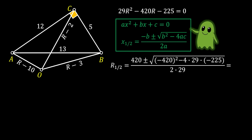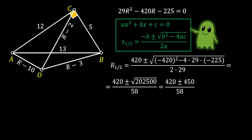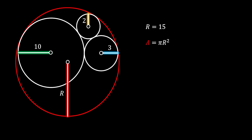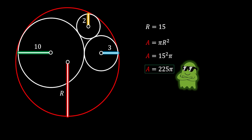Calculating the value under the square root, we get a beautiful result equal to 450. This gives two possible solutions: R = −15/29 and R = 15. Since a radius cannot be negative, the value for our radius is 15. Finding the area of the red circle as πR² and substituting R = 15, we get the same result as with the kissing circle theorem: 225π square units. Both methods confirm the same solution.